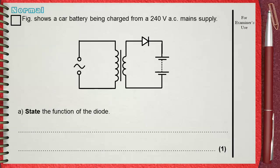The figure shows a car battery being charged from a 240 volts AC main supply. State the function of the diode.